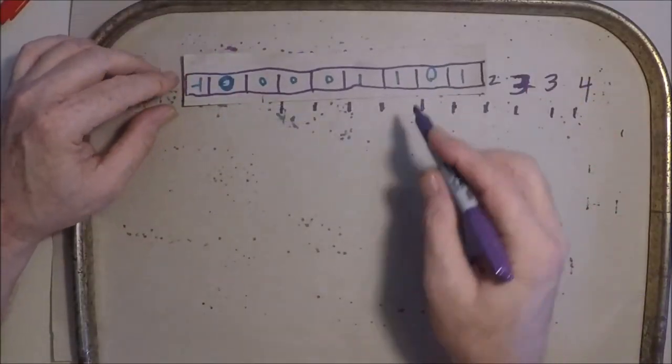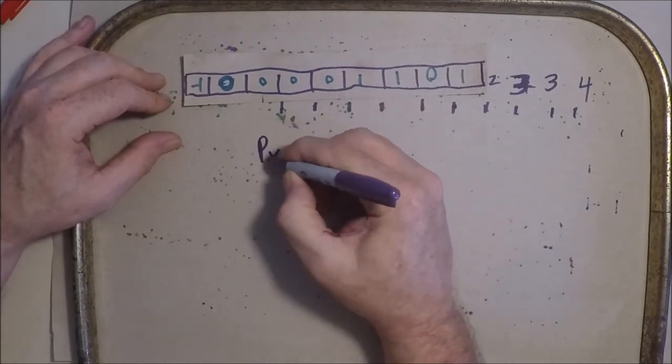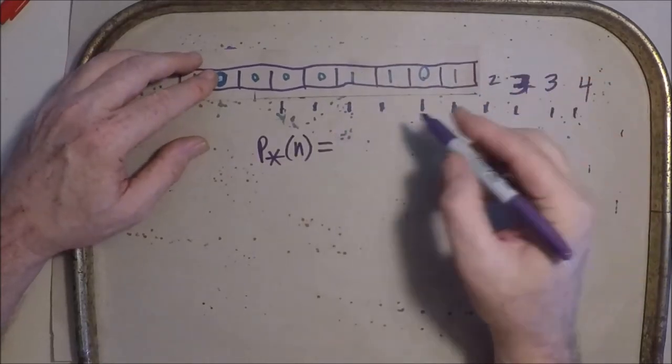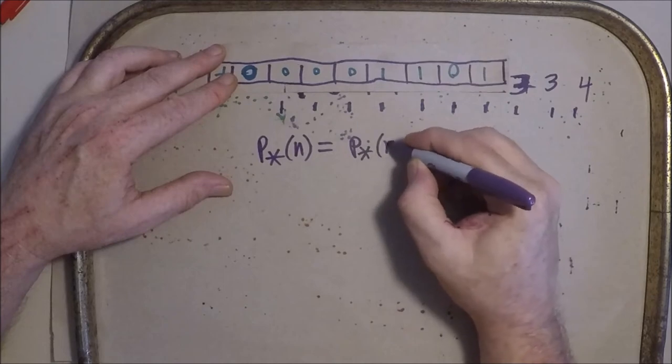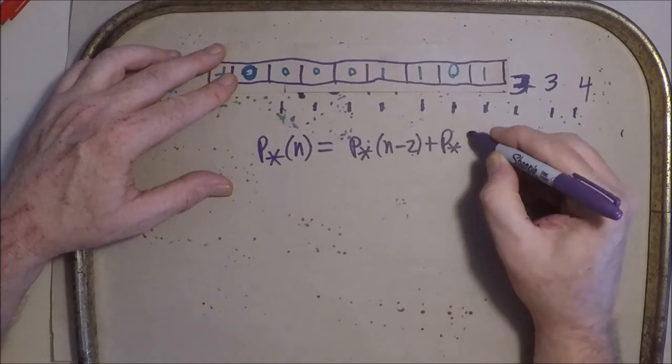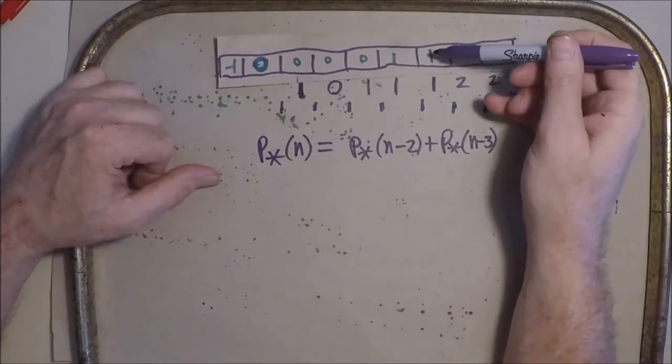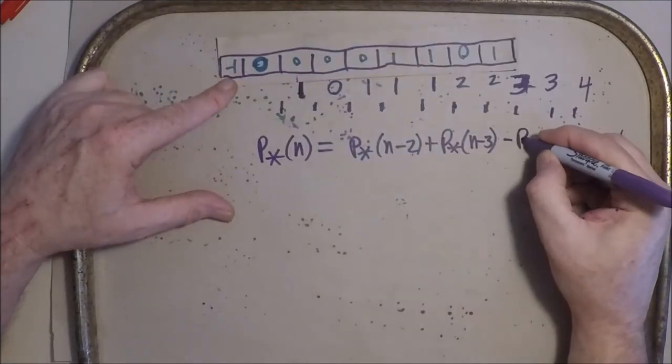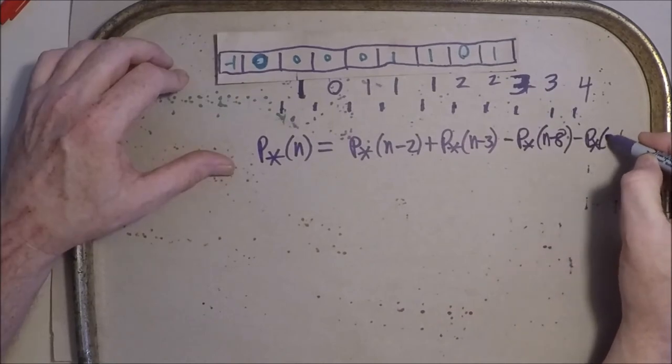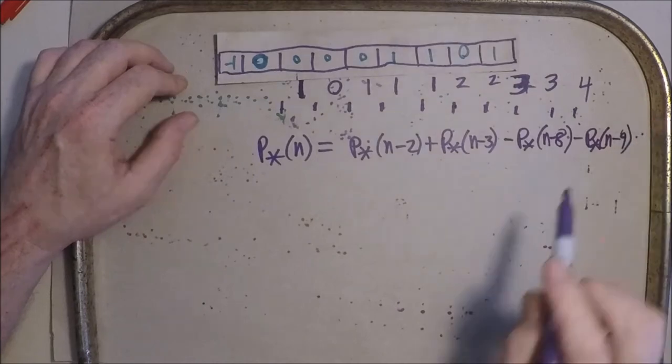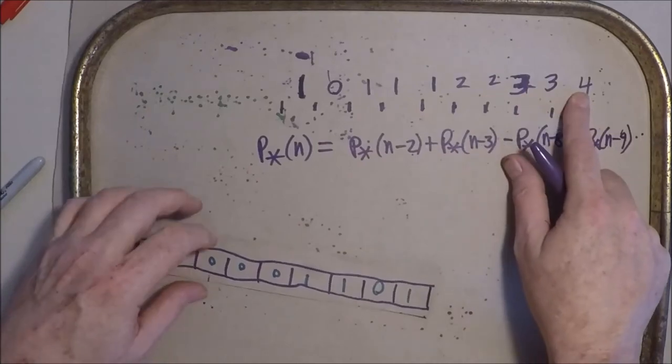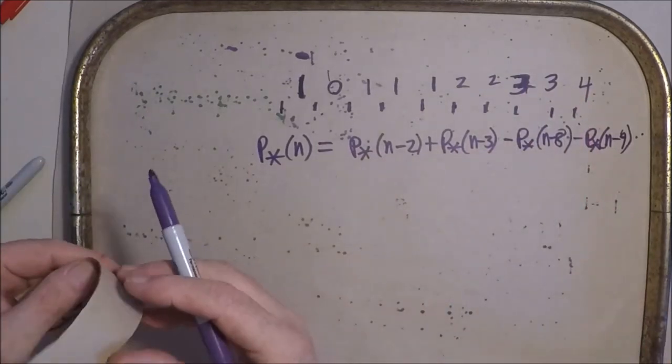That's our recurrence. If we say P star, four primes into primes of n, well we can write it out as P star of n minus three. So that's one, two, three, four, five, six, seven, eight. Minus P star of n minus eight, minus P star of n minus nine, et cetera, et cetera. So, there's your recurrence for partitions into prime parts.